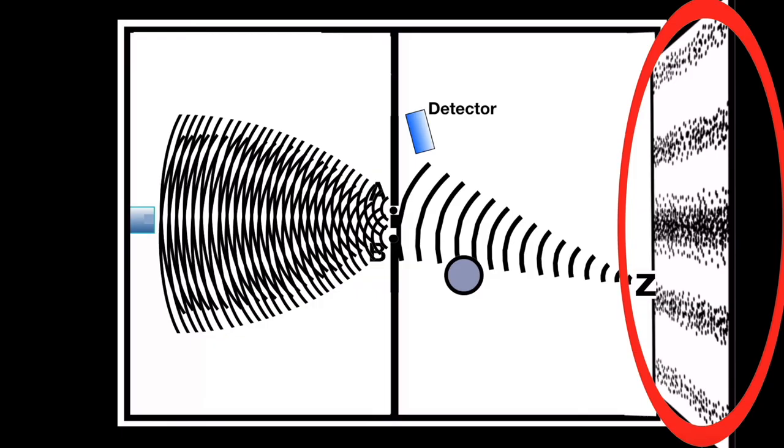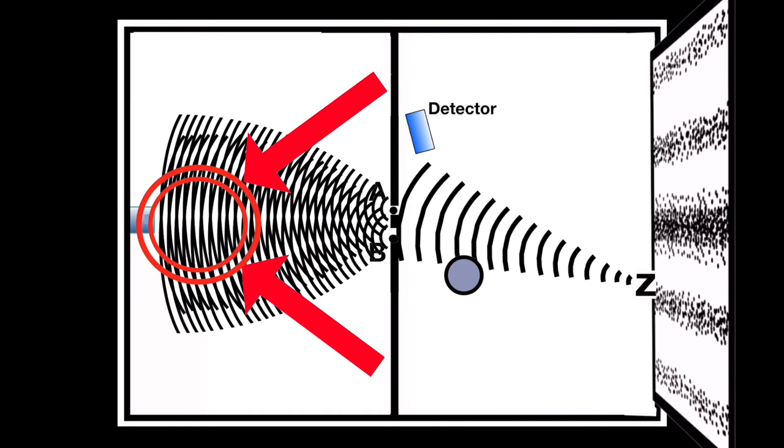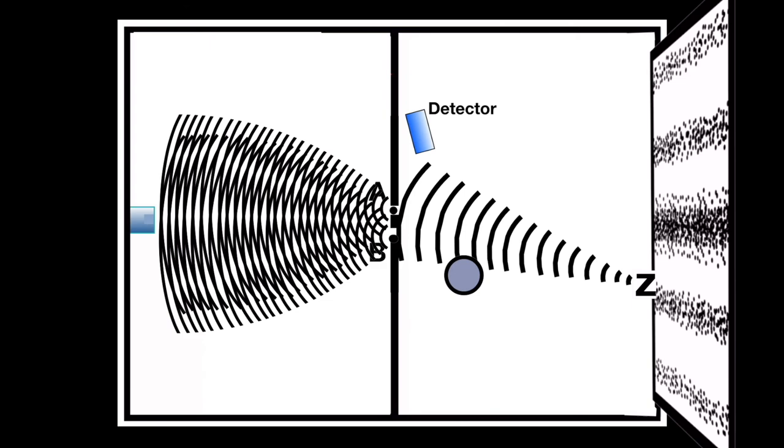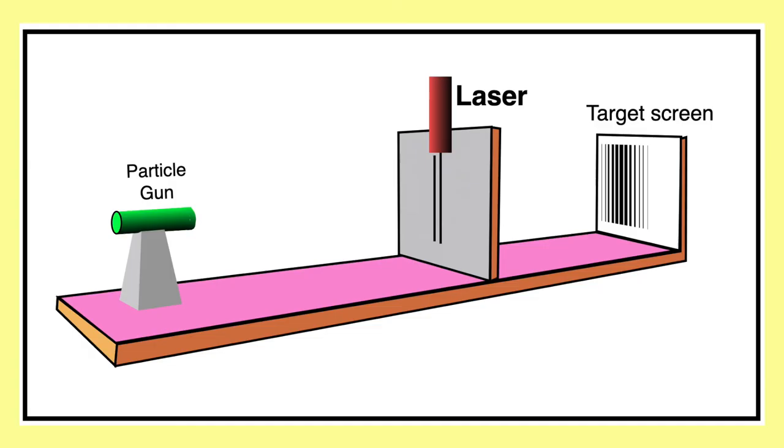The wave pattern on a target screen is a picture of the wave interference of elementary waves impinging on the particle gun. But we just said that if there's a lamp in the experiment, there is no wave interference, and therefore the final pattern on the target screen will show no wave interference. This explains complementarity.